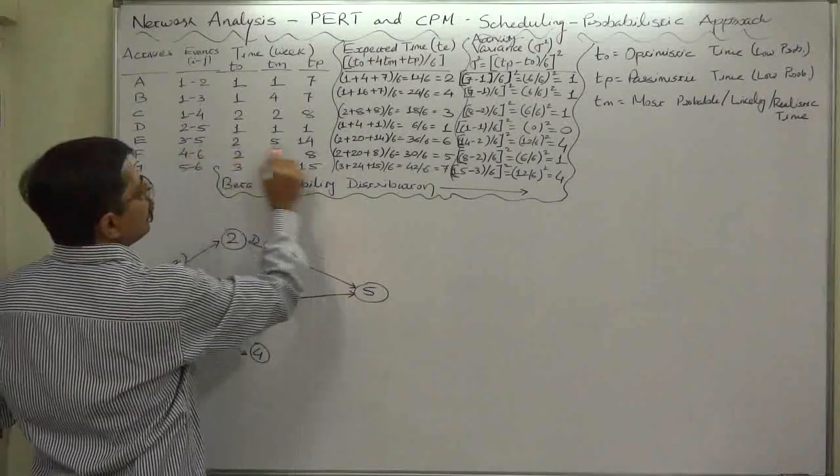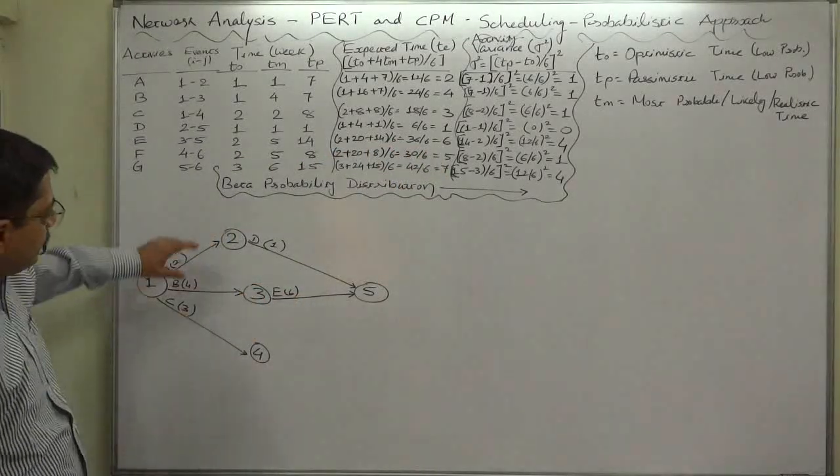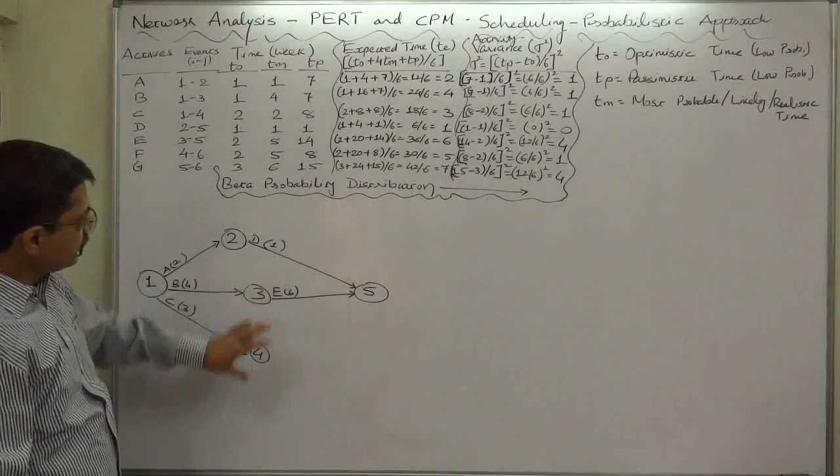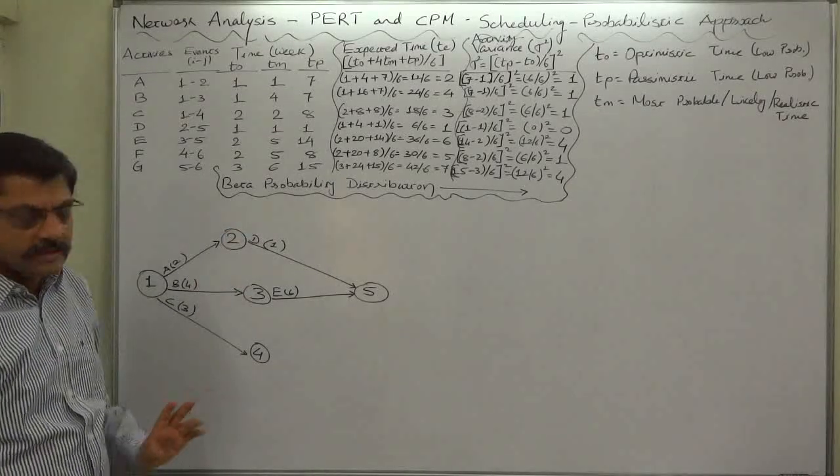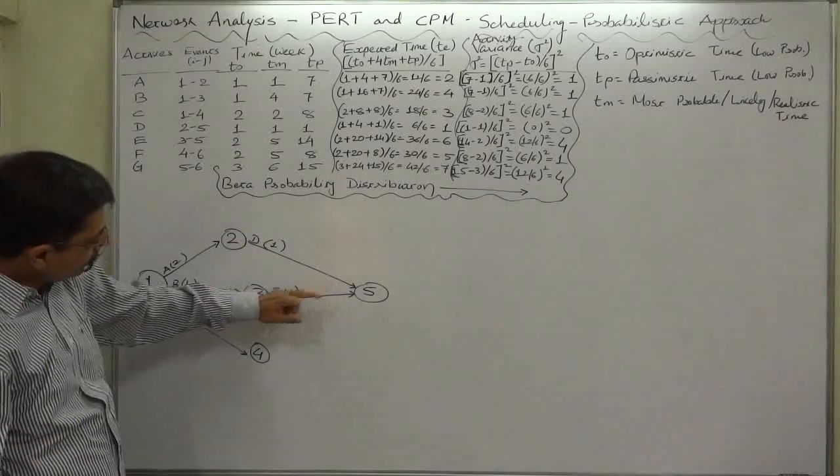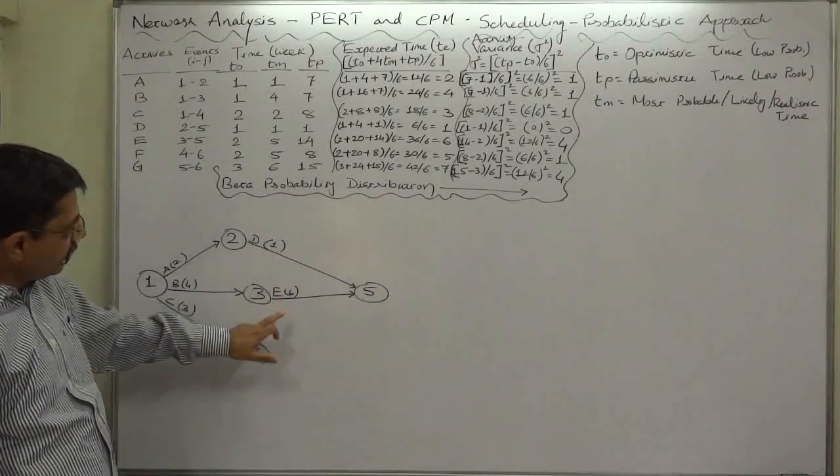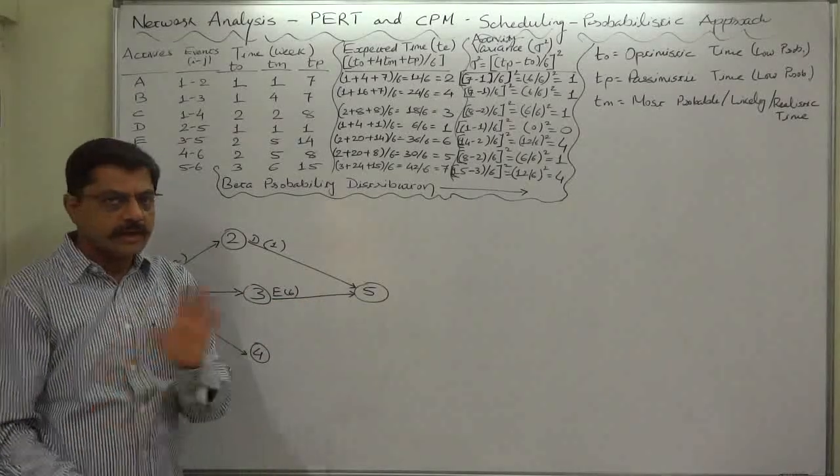Again, at the cost of repetition, I want to remind you that the length of the arrow is not at all dependent on the duration. We have to draw an arrow of the activity taking only one week longer than the arrow of an activity taking six weeks. Length of the arrow is not at all dependent on the duration of the activity.